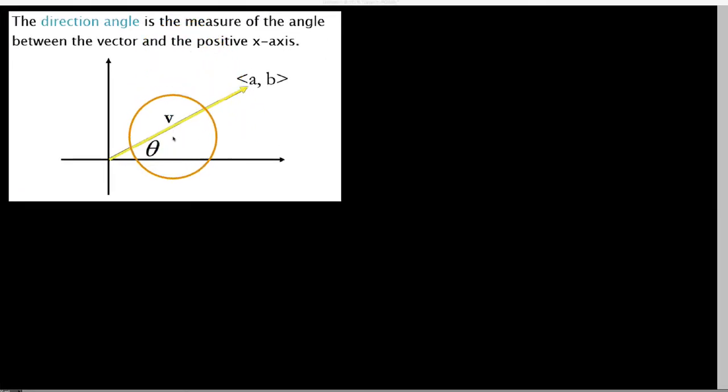Okay YouTube, in this video we're going to be defining what we mean by a direction angle when it comes to vectors in standard position. That is, some vector that starts at the origin and terminates somewhere out in the x-y coordinate plane. So let's go ahead and define this.